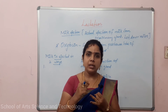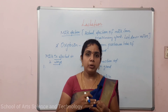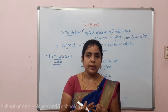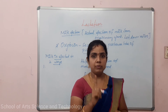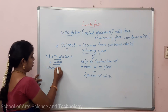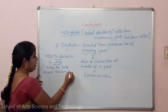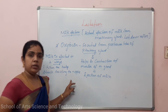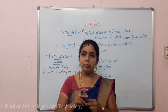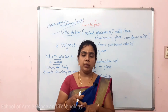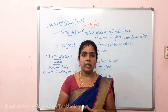When the baby starts suckling the nipple, sensory signals travel to the brain and then to the pituitary gland, which secretes the oxytocin hormone, causing milk ejection. This is the neuroendocrine mechanism — both the nervous system and the endocrine system are involved in parturition and lactation.